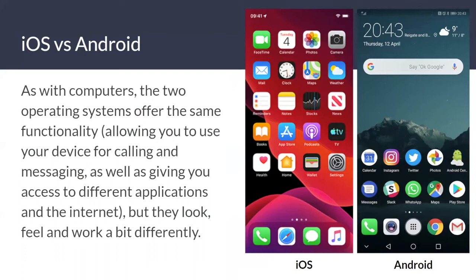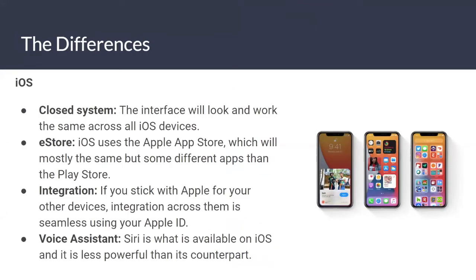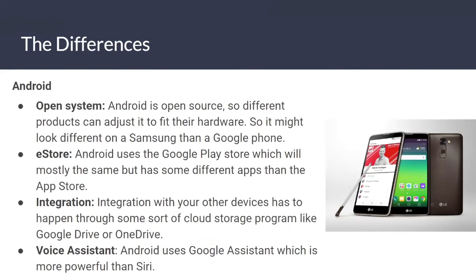iOS versus Android: as with computers, the two operating systems offer the same functionality, allowing you to use your device for calling, messaging, and accessing different applications and the internet, but they look and work a bit differently. iOS is a closed system — the interface will look and work the same across all iOS devices. iOS uses the Apple App Store, which has mostly the same but some different apps than the Play Store. Integration across Apple devices is seamless using your Apple ID. The voice assistant Siri is available on iOS but is less powerful than its counterpart.